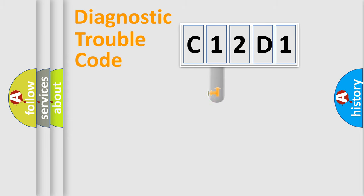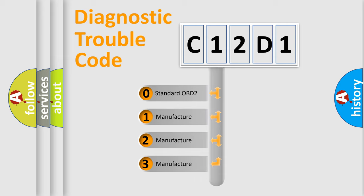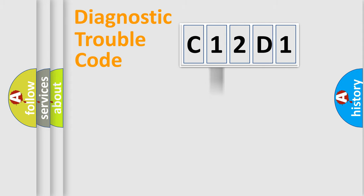This distribution is defined in the first character code. If the second character is expressed as zero, it is a standardized error. In the case of numbers 1, 2, or 3, it is a manufacturer-specific error expression.